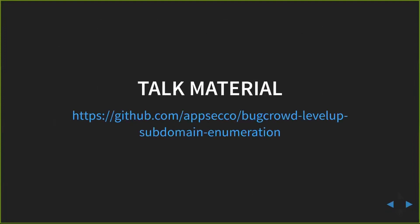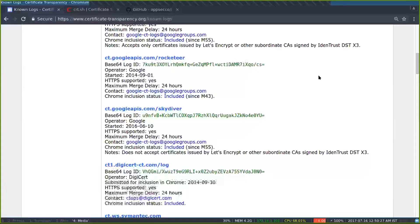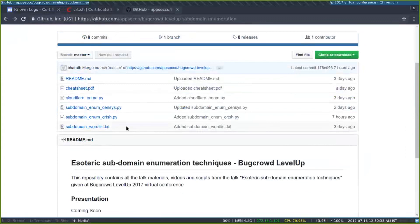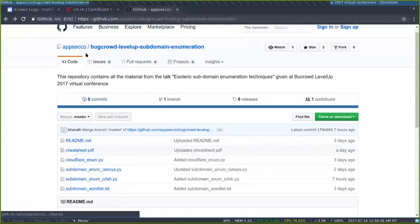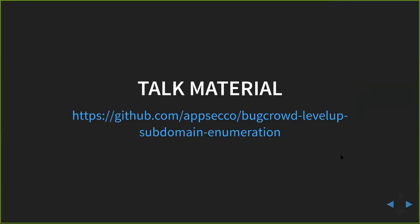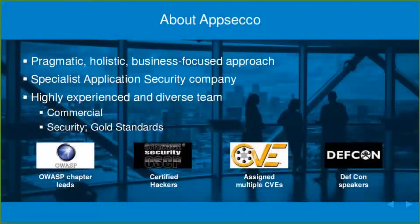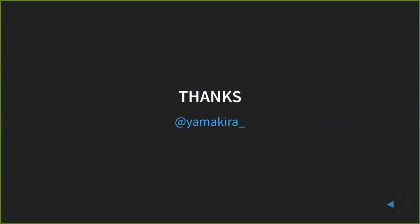That's the end of the talk. If you want the scripts, cheat sheet, or slides, go to the AppSecco GitHub account — it's AppSecco subdomain enumeration — and you can find everything there. These are the references if you want to read more; I just covered the tip of the iceberg with a few more brilliant techniques out there. I work for AppSecco and that's what we do. If you guys have any questions, I'll take them now.